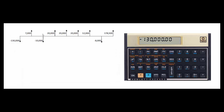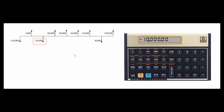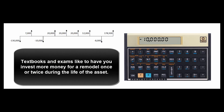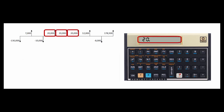Next is $7,000 in — hit $7,000 G-CFJ. It doesn't repeat. Then $10,000 out, so we change the sign and hit G-CFJ. Typically this represents buying a new machine and then having to remodel it after the first year, requiring an additional cash investment.